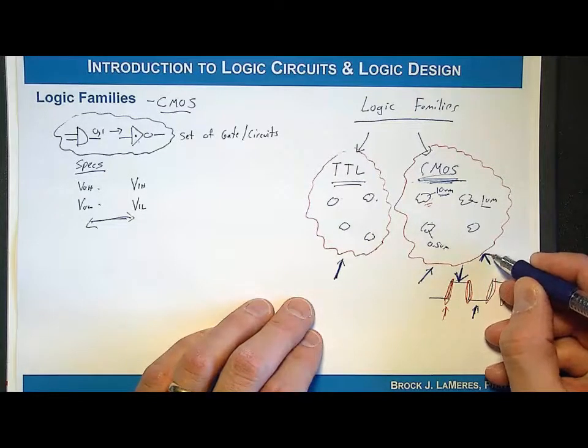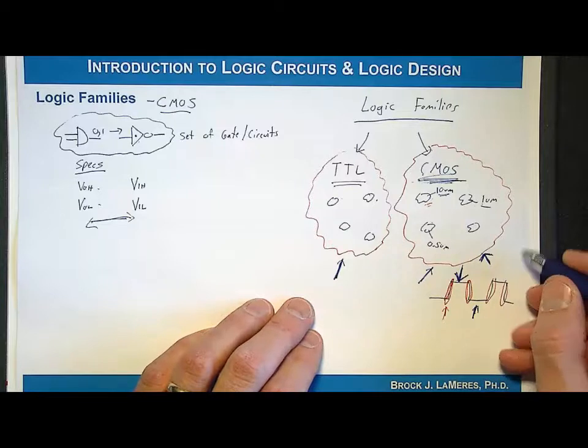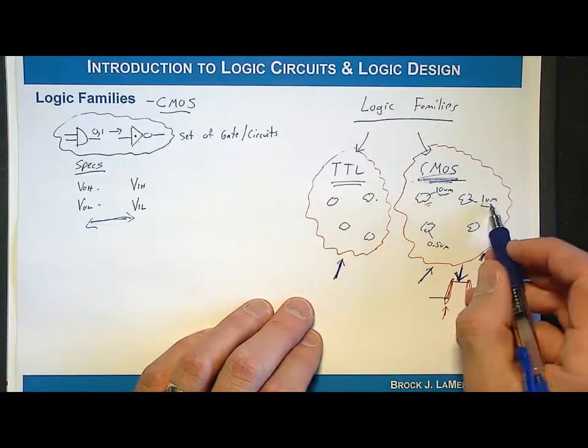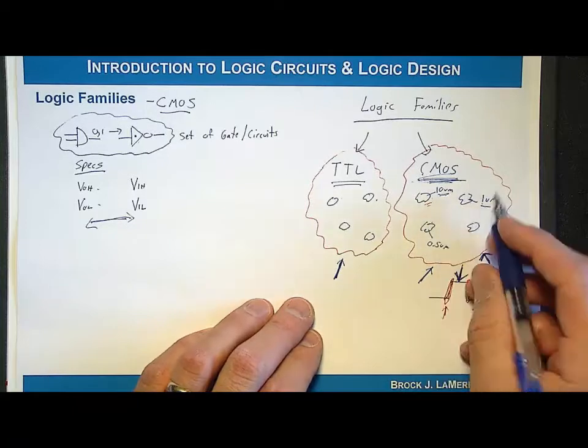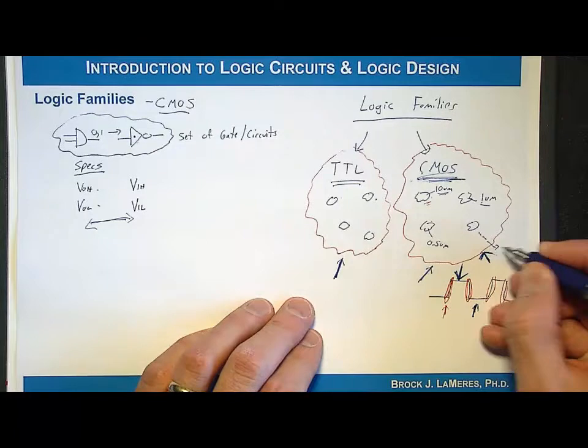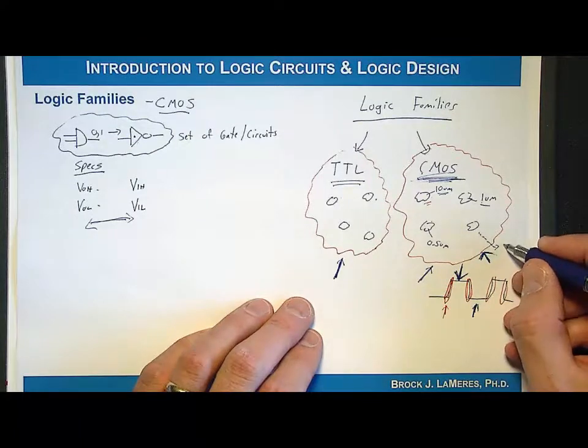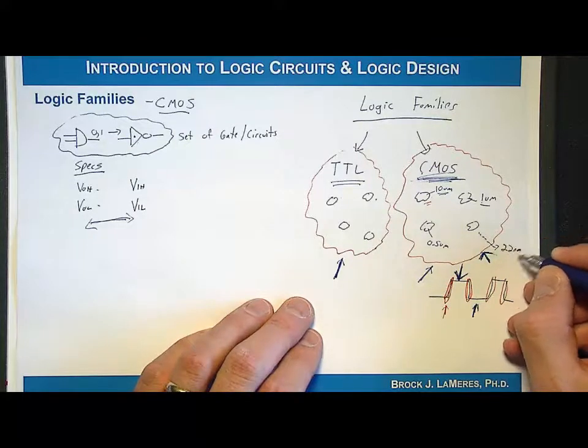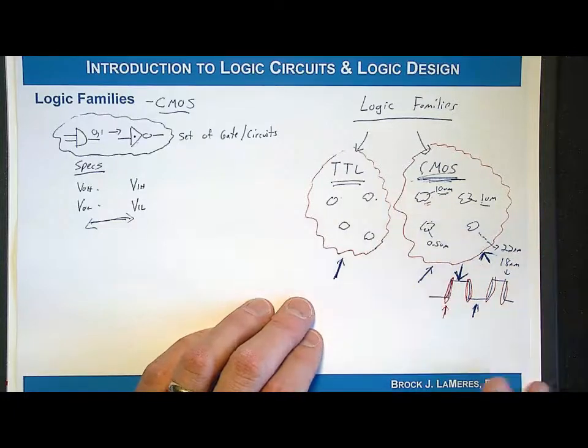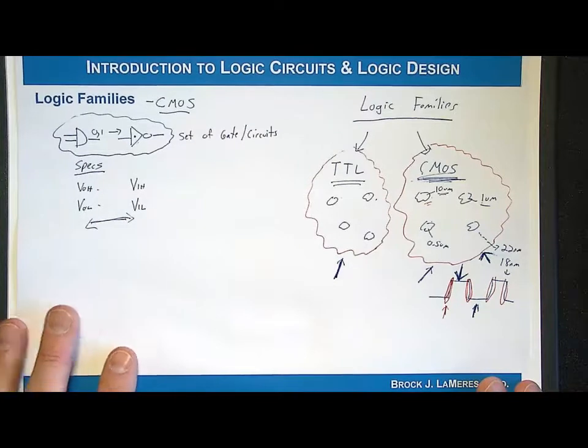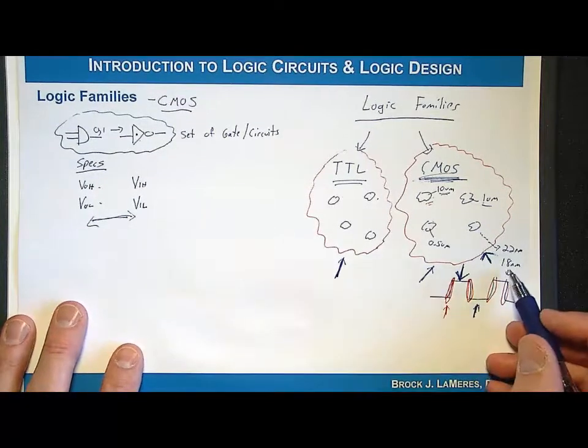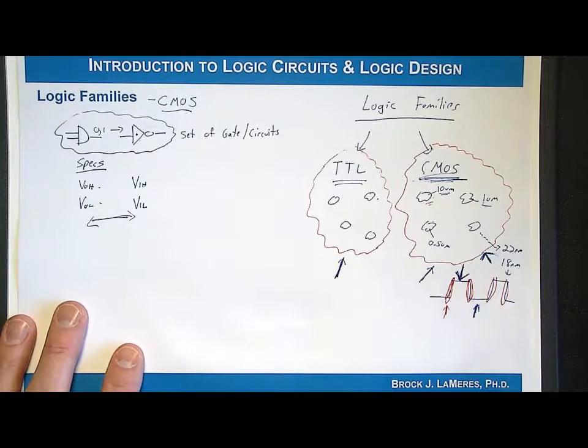The first ones were 10 micron, then they went down to 5 micron, 1 micron, then 0.5, etc. If you look at where we're at in 2015, we're down to 22 nanometer feature sizes, 18 nanometer feature sizes, and so forth. It's very small. This is how you're able to get millions, if not billions, of transistors on a single integrated circuit.